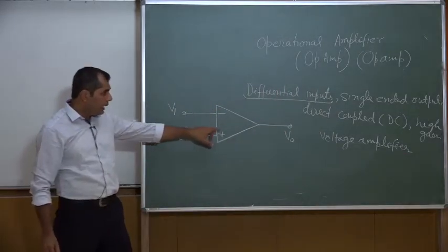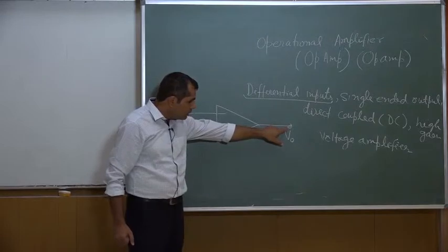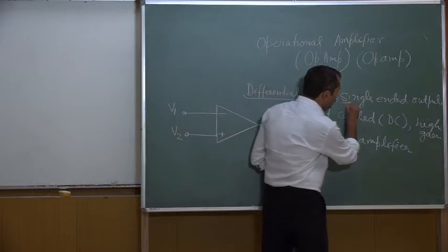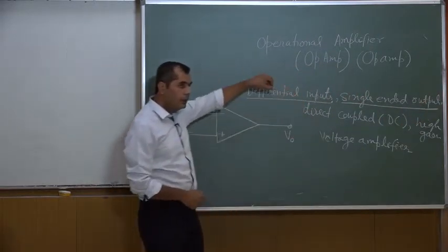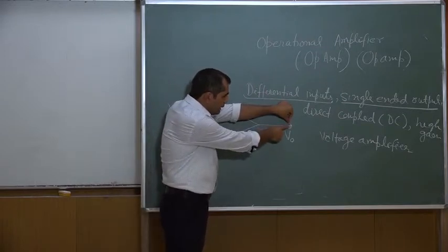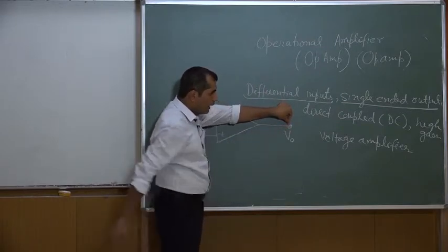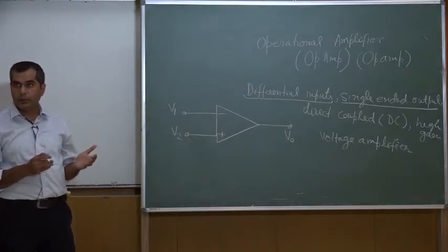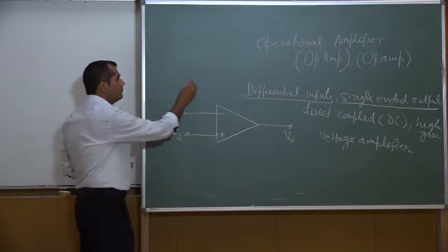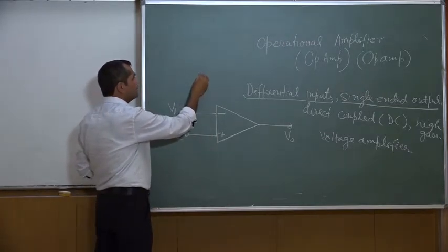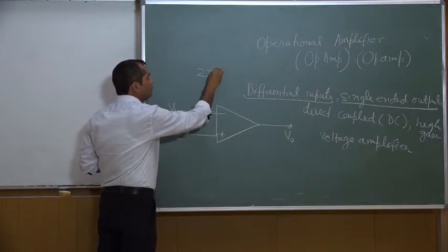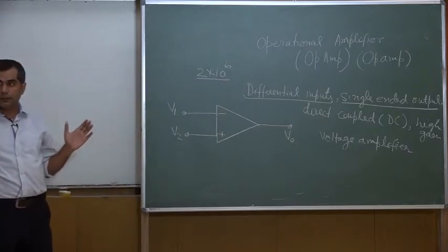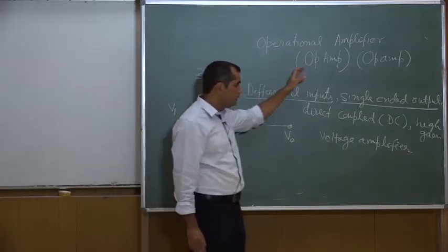If a difference voltage appears between these two terminals, this amplifier will sense and amplify that difference — that is why the term 'differential inputs' is used. The output is taken between the output terminal and ground, which is why it is single-ended output. The typical voltage gain for one operational amplifier is 2 × 10⁶.